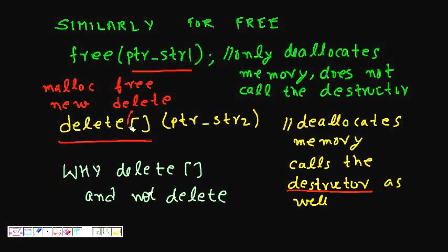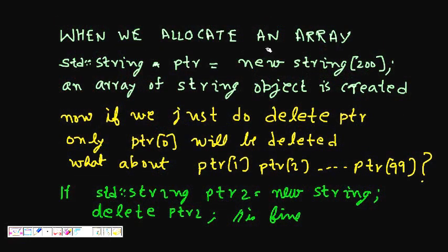If you are using malloc use free, if you are using new use delete. But some users might have seen - what is this? Delete and then bracket open bracket close. I could have written just delete ptr_str2. So let's see what is the importance of this one. Why delete[] and not simple delete? When we allocate an array like array of objects: std::string* ptr = new string[200]. So I'm allocating 200 memory locations for 200 string objects and calling their constructors.